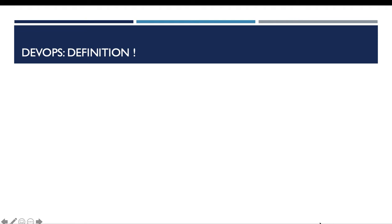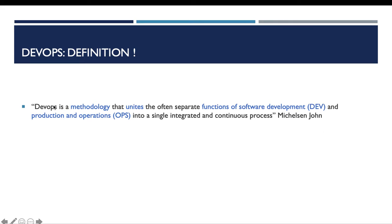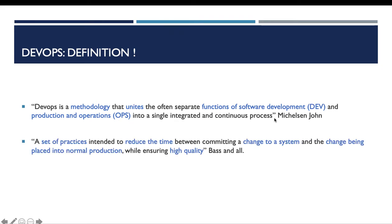For the definition of DevOps in literature, we find many definitions and there is no standard definition. Some consider DevOps as a methodology, some consider DevOps as an IT movement, and others consider it as a paradigm or a set of practices. From existing definitions, I retain two definitions. The first one is given by Michelson-Joel, who defines DevOps as a methodology that unites functions of software development and production and operations into a single integrated and continuous process. The second definition is given by Bass et al., who define DevOps as a set of practices intended to reduce the time between committing a change to a system and the change being placed into normal production while ensuring high quality.